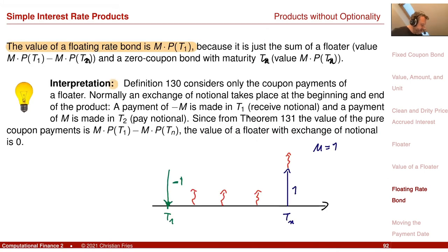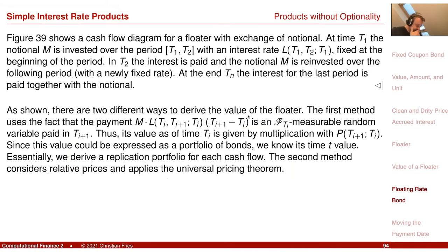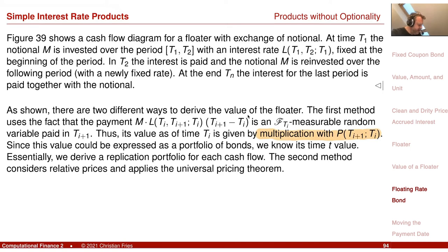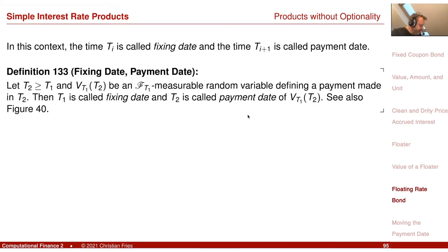So this is a cash flow with a notional exchange: in the beginning I pay the notional with a minus, and at the end I receive the notional with a plus. The value of this whole thing is then zero. We saw that we had two different ways of proving this, and the important thing in the first version was that we can transform values after the fixing time by multiplying with zero-coupon bond prices — a trick that is really often used.